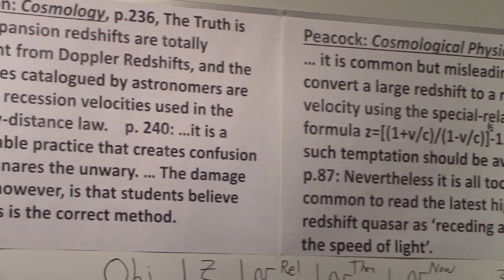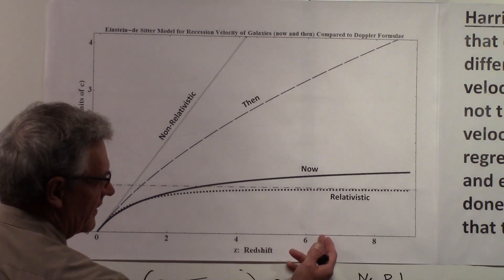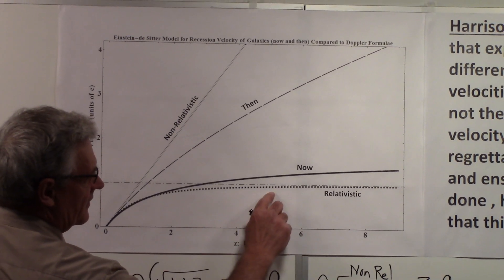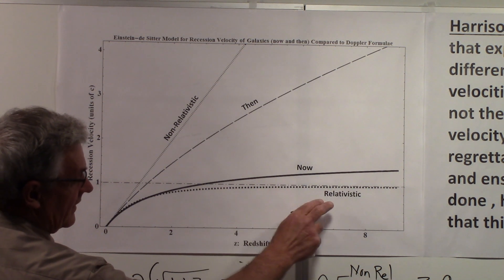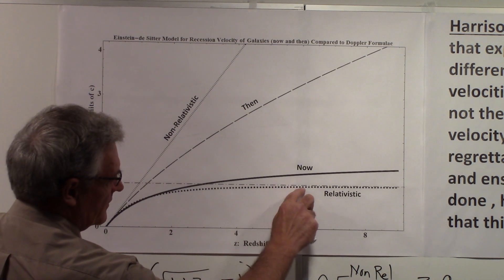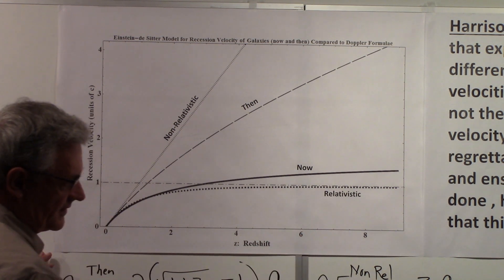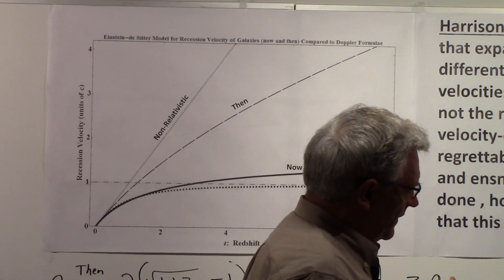On page 87, he says, 'Nevertheless, it is all too common to read that the latest highest redshift quasar is receding at 95% the speed of light.' So in other words, if you go back here and you look at a high redshift value, you can see it is getting closer and closer—you know, perhaps here it is about 95% speed of light based on the relativistic Doppler formula, and it gets closer and closer as z increases.